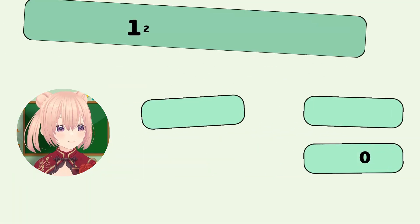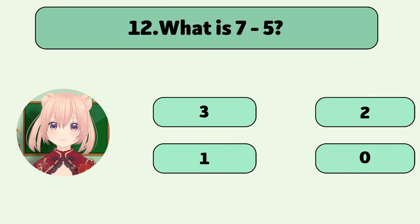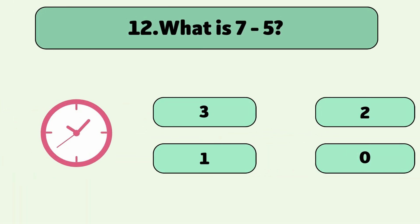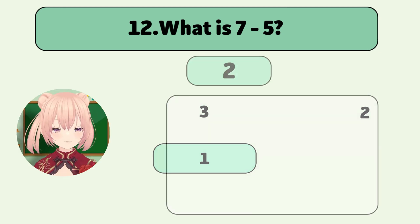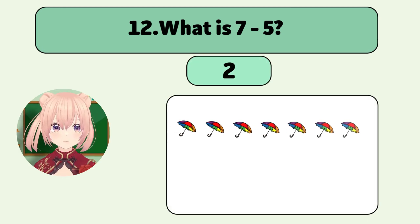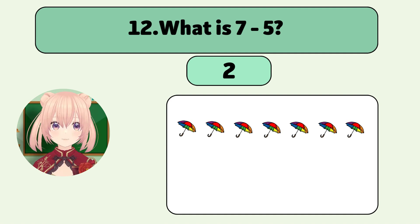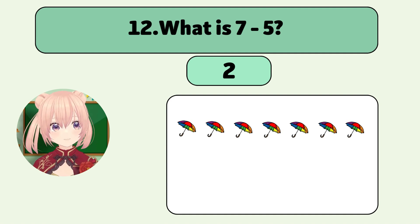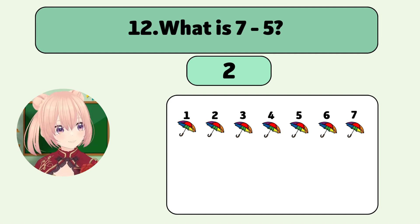What is 7 minus 5? The answer is 2! We start with 7 umbrellas and take away 5!